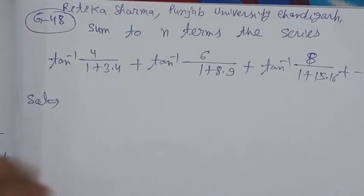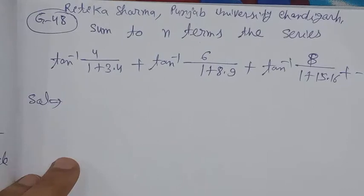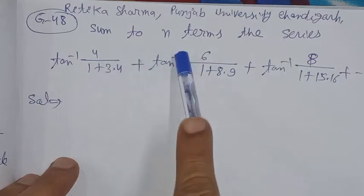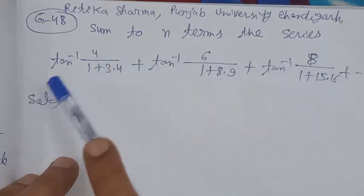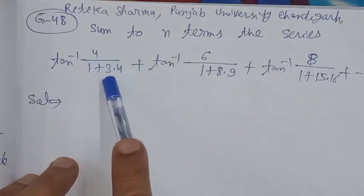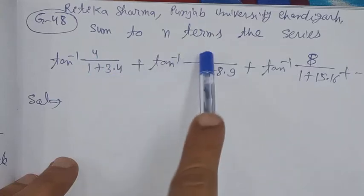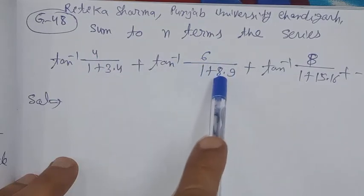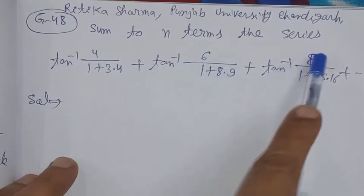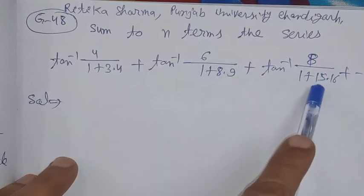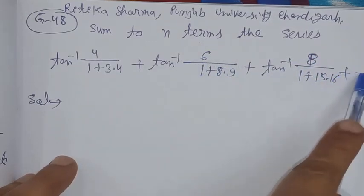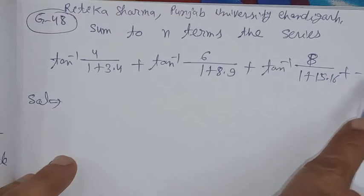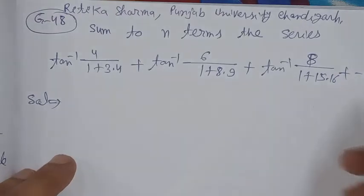Bismillahirrahmanirrahim. On the demand of Hrithika Sharma from Punjab University Chandigarh, we sum to n terms the series: tan⁻¹(4/(1+3·4)) + tan⁻¹(6/(1+8·9)) + tan⁻¹(8/(1+15·16)) + and so on to n terms.